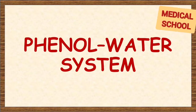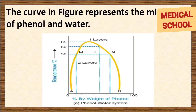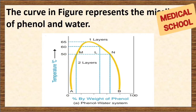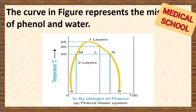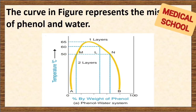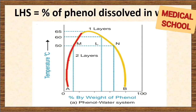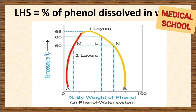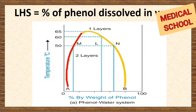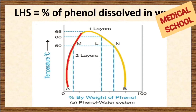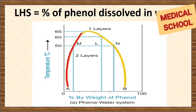Phenol-water system. The phenol-water system is an example of partial miscibility. The curve in the figure represents the miscibility of phenol in water. The left-hand side of the parabolic curve, drawn as a red line, represents the percentage of phenol dissolved in water at various temperatures.